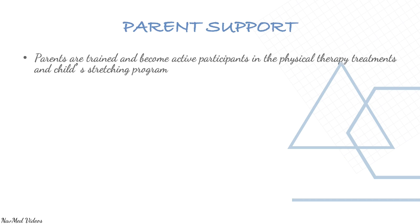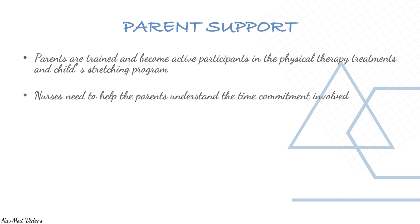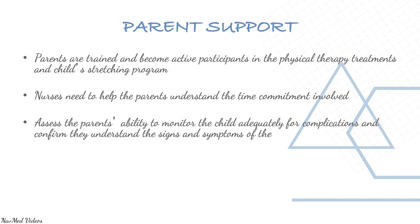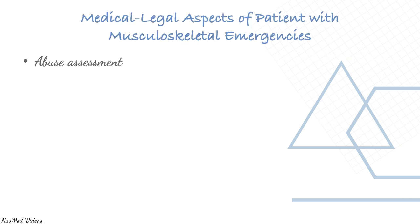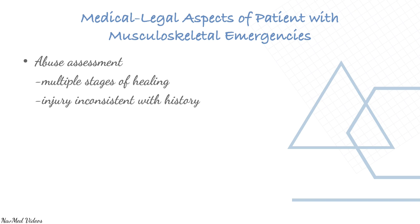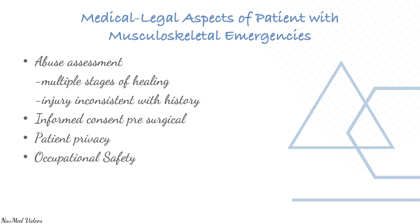Vigilance for abuse is very important — if anything is inconsistent with the history, investigate. Parental support is important; parents should be trained as active participants in physical therapy and the child's stretching program. Nurses need to help parents understand the time commitment and confirm they understand the signs and symptoms of complications. Medical-legal aspects include abuse assessment, multiple stages of healing, informed consent for pre-surgical patients, privacy, and occupational safety and health risk management.